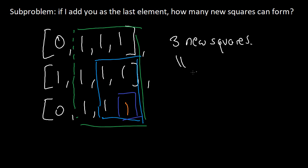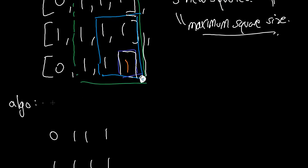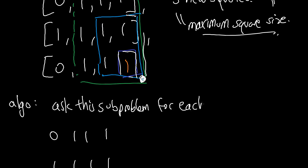The number of new squares is actually equal to the maximum square size you can form. This makes sense because if you can make a square of size three by three, then inside it must hide a square of size two by two and also one by one, all sharing the same lower right corner. So we can twist this problem into: if I add you as the last element, what's the maximum square size you can form? The algorithm just asks this sub-problem for each element and totals up the new squares.